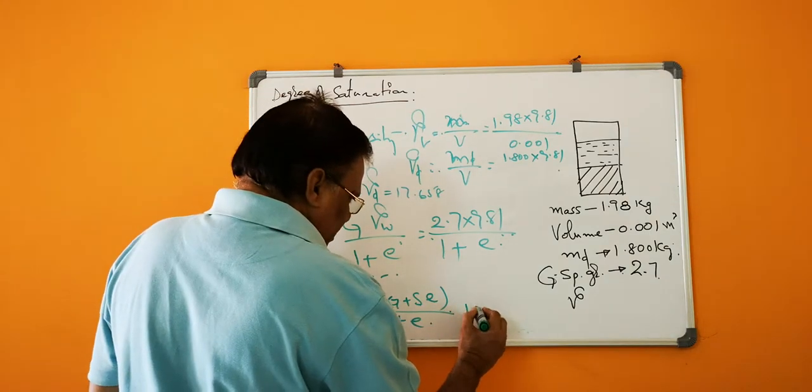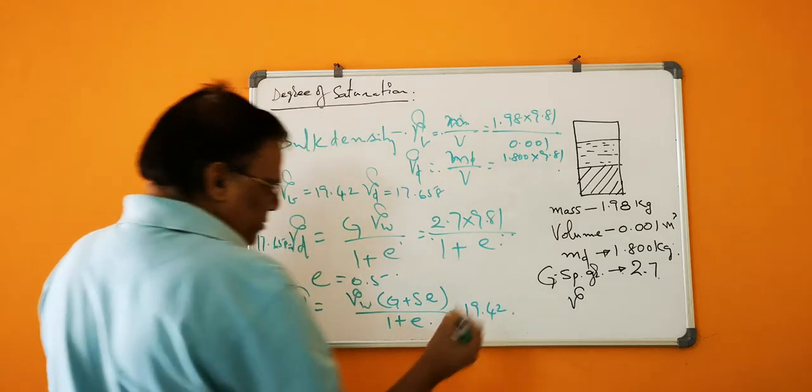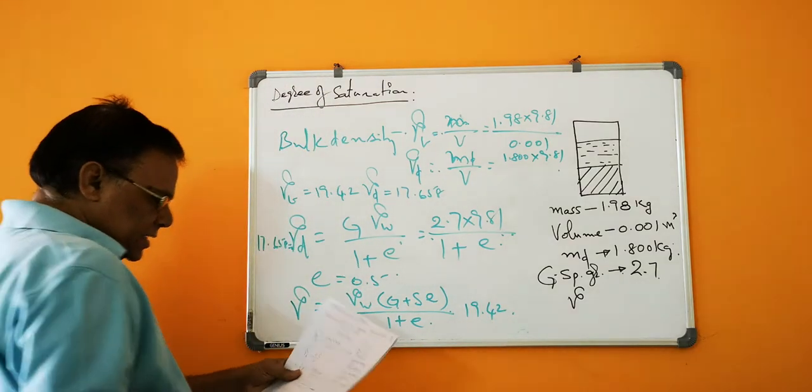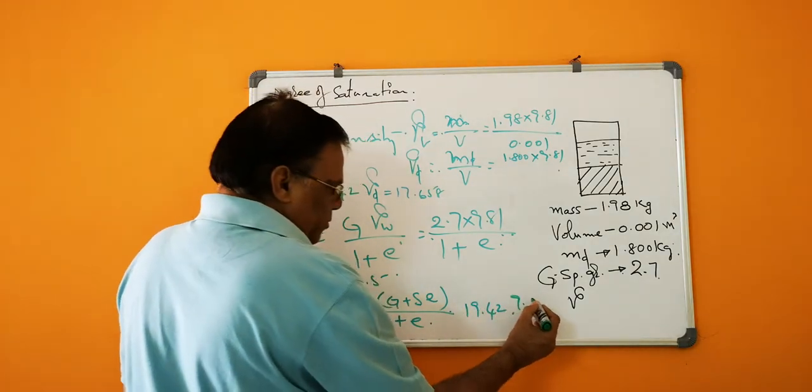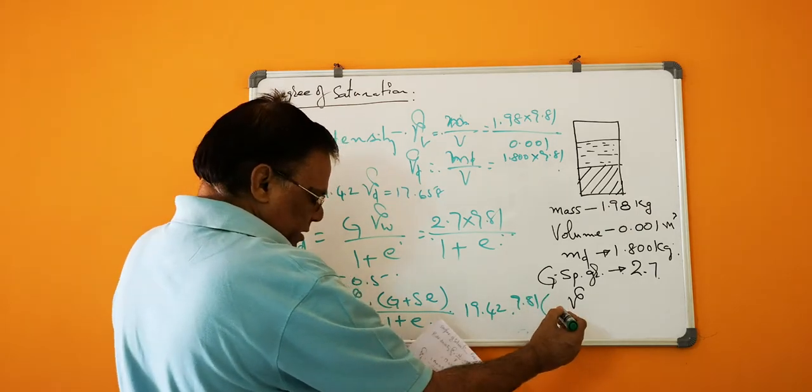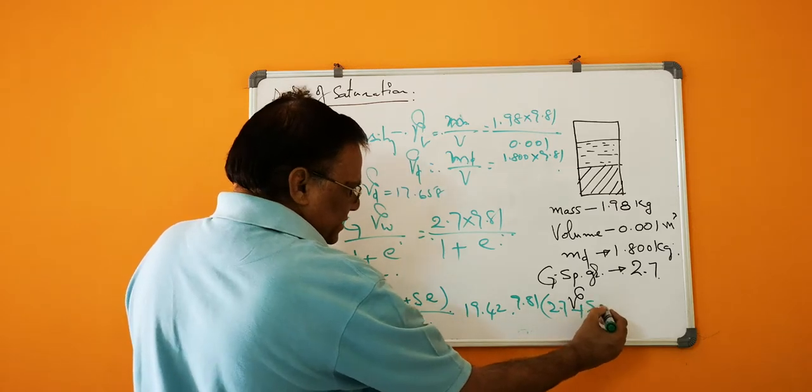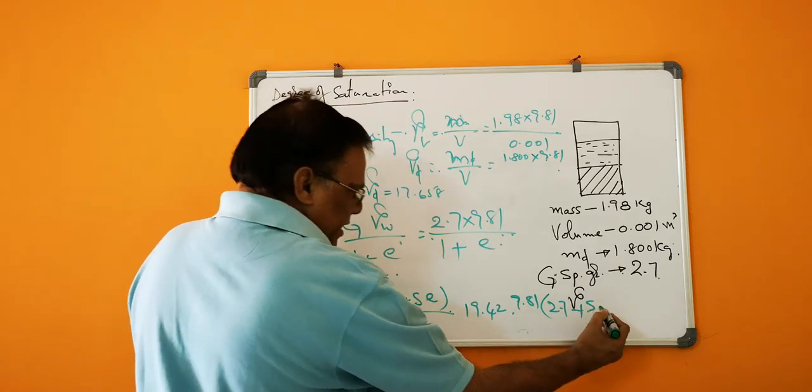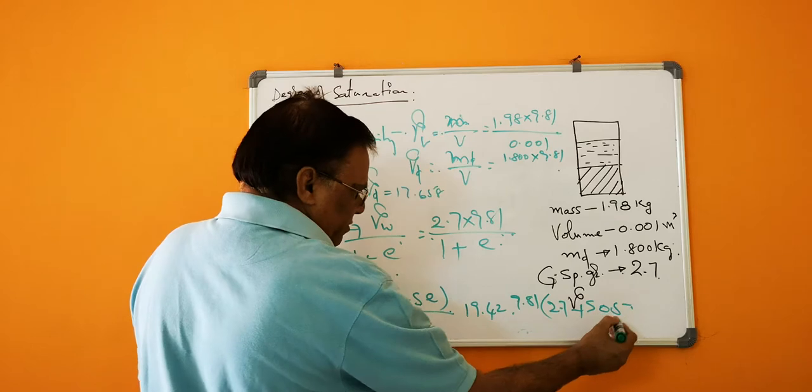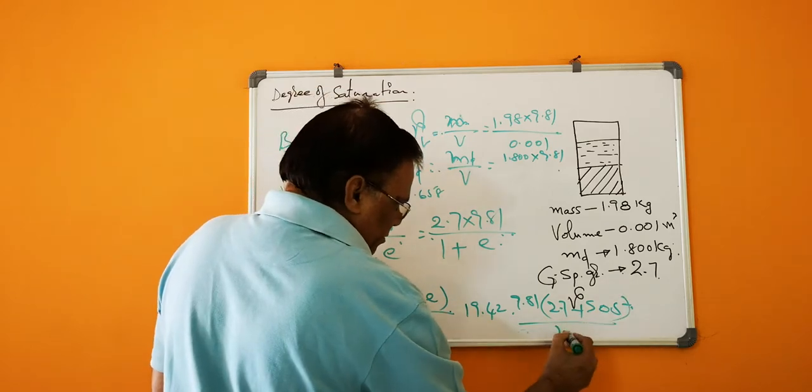So this is 19.42, that is the gamma part, into 9.81, into G is 2.7, S is to be calculated, and e is 0.5 divided by 1.5.